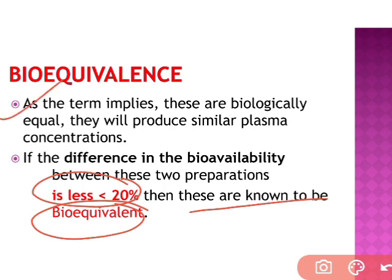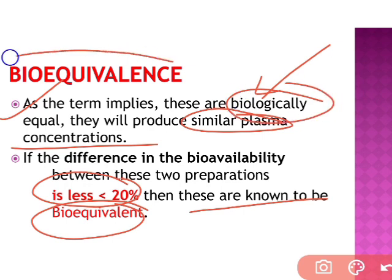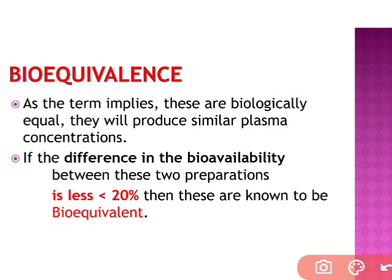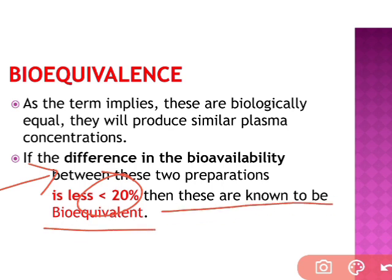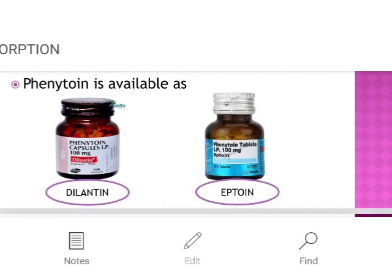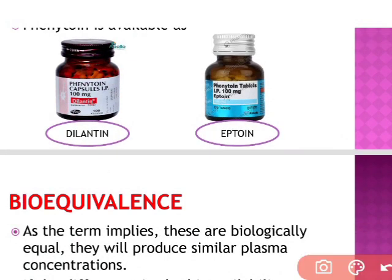As the term implies, bioequivalent means they are biologically equal — they will produce similar plasma concentrations. If the difference in bioavailability of Aptoin and Dilantin is less than 20%, they are known to be bioequivalent, producing less than 20% difference in their bioavailability.